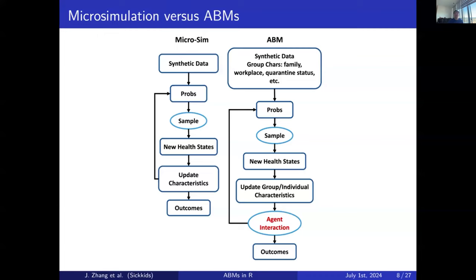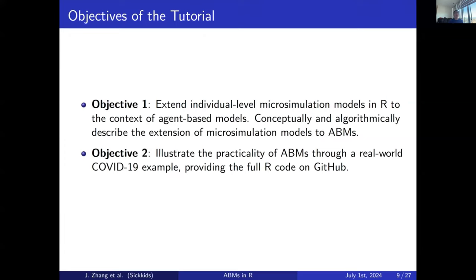For the agent-based model, there are two key differences. First, in the synthetic data generation or data initialization, other than individual-level characteristics, we now have group characteristics such as family, workplace, socioeconomic status, and so on. Similar to micro-simulation, there is a probabilistic state transition where we randomly sample new health states. In addition to updating individual-level characteristics, we now allow agents to interact within predefined groups — for example, people contacting each other within the workplace — which informs changes in probabilities leading to other health states. After running the simulation, we do similar outcome analysis.